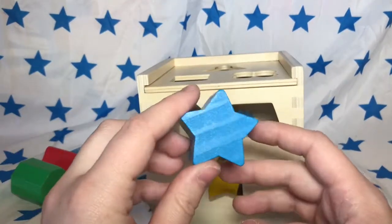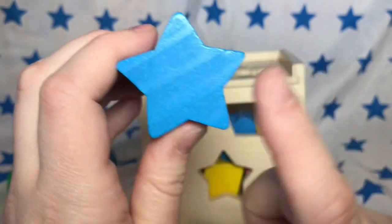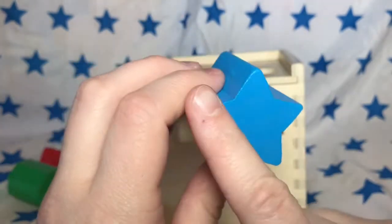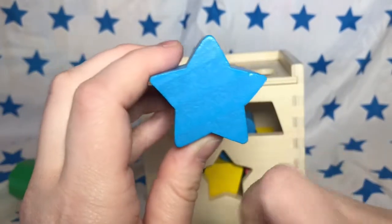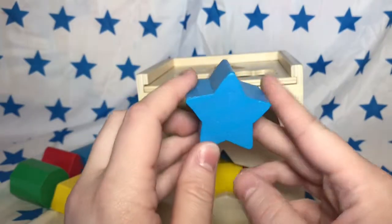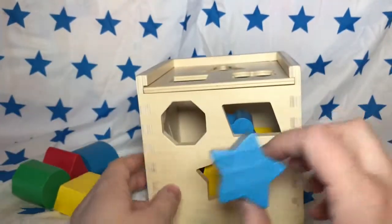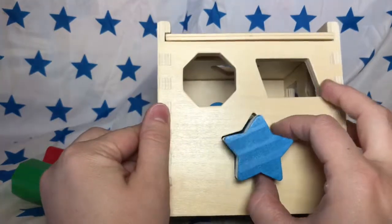This is one of my favorite shapes. It's a star. It has five points. One, two, three, four, five. And it matches our background, which is also blue stars. This one is also a unique shape and pretty easy to find. It's right here on the front.